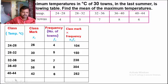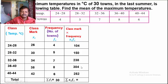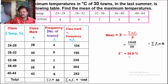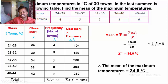In the last row, Sigma Fi = 4 + 5 + 7 + 8 + 6 = 30. And Sigma Xi Fi = 1048. Calculate mean: X-bar = Sigma Xi Fi upon n = 1048 upon 30 (where n = Sigma Fi = 30). So X-bar = 34.93 ≈ 34.9 degrees Celsius. The mean of maximum temperature is 34.9 degrees Celsius.